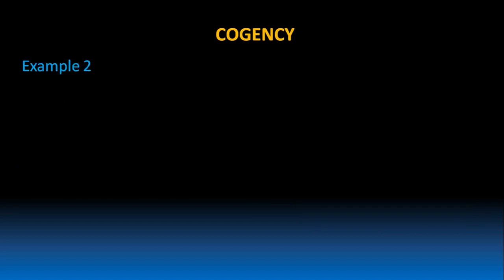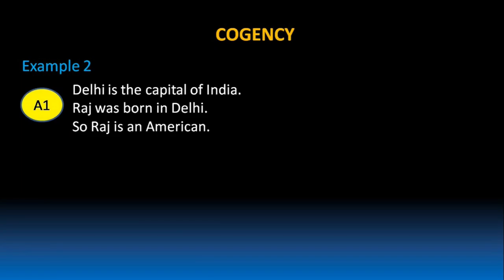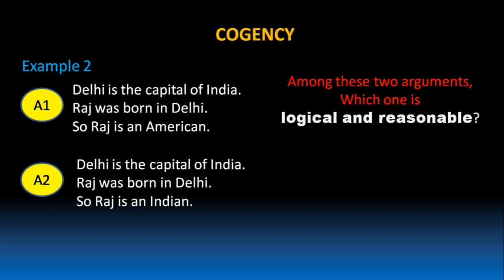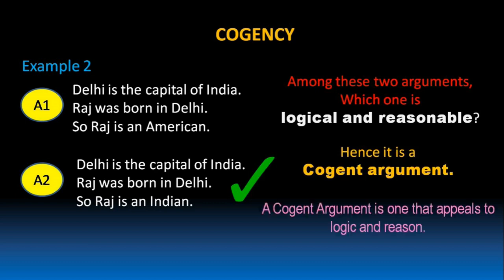Let's take one more example. Argument 1: Delhi is the capital of India. Raj was born in Delhi. So Raj is an American. Argument 2: Delhi is the capital of India. Raj was born in Delhi. So Raj is an Indian. Among these two arguments, which one is logical and reasonable? Obviously, Argument 2 is logical and reasonable, because Delhi is the capital of India and Raj was born in Delhi, so Raj is an Indian — he cannot be an American. Hence, it is a cogent argument. A cogent argument is one that appeals to logic and reason.